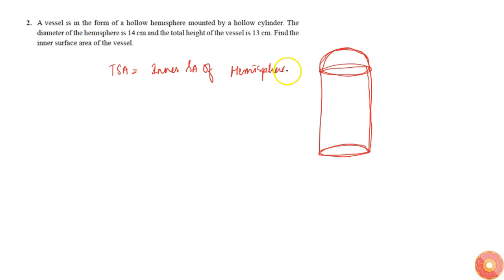Plus the side surface area of cylinder. First thing is there is this hemisphere whose area has to be considered, and then there is the cylinder.